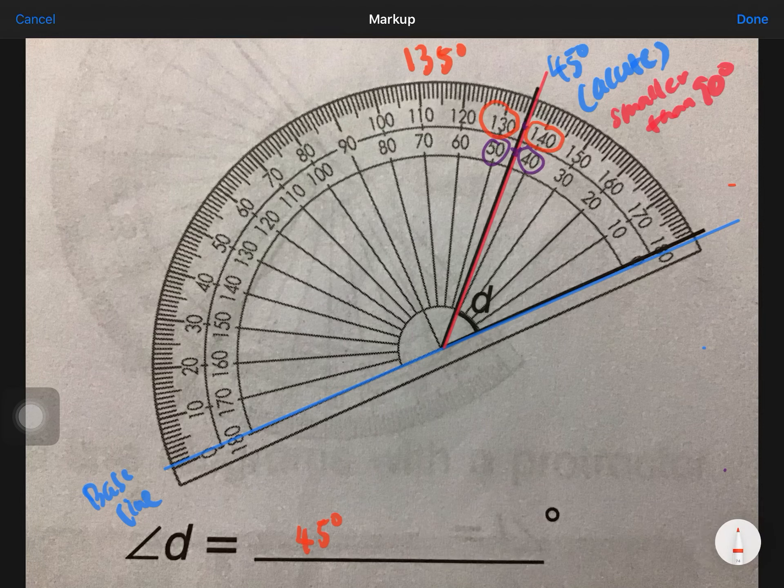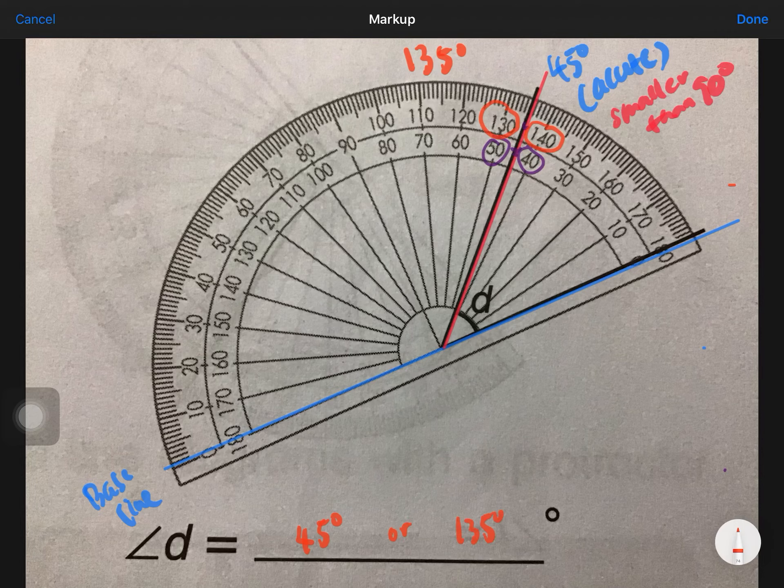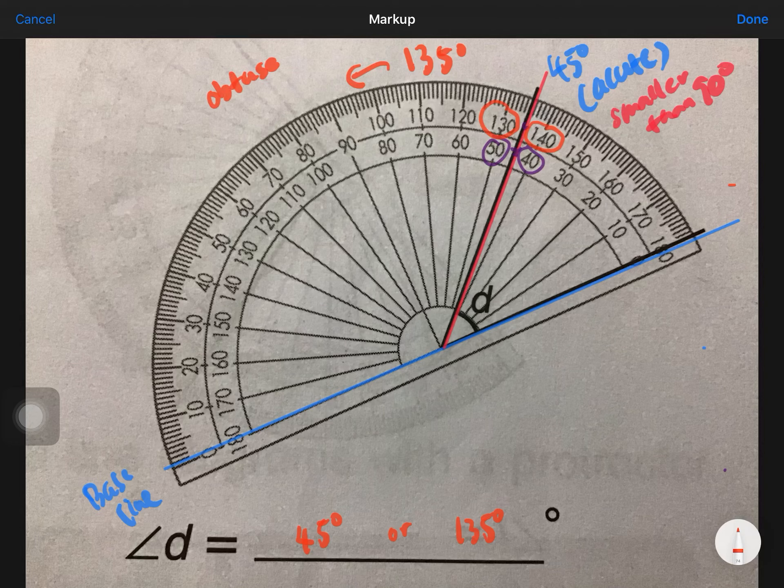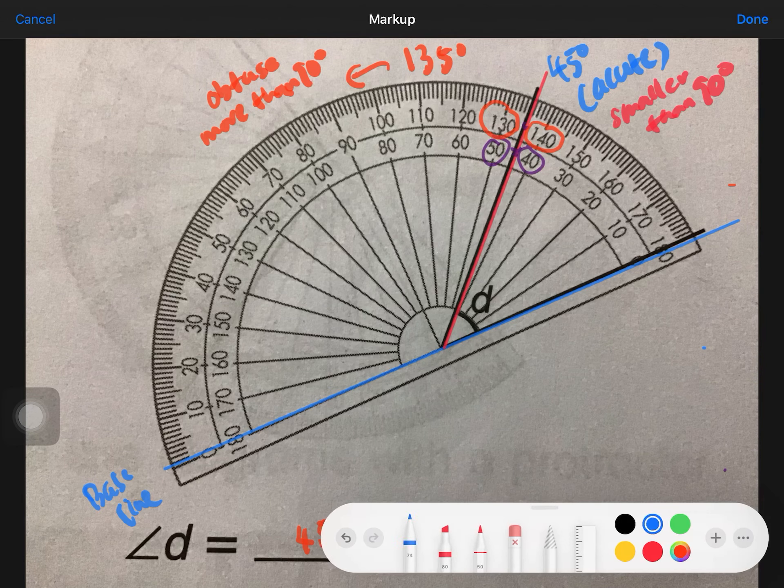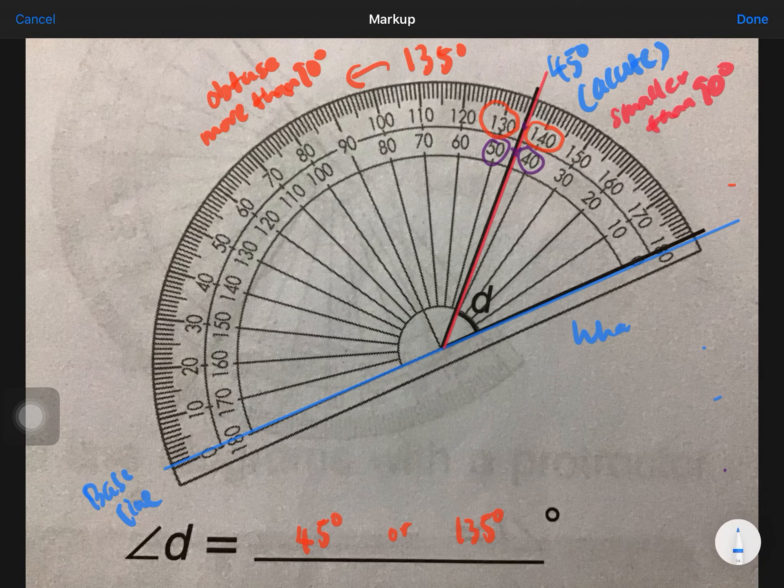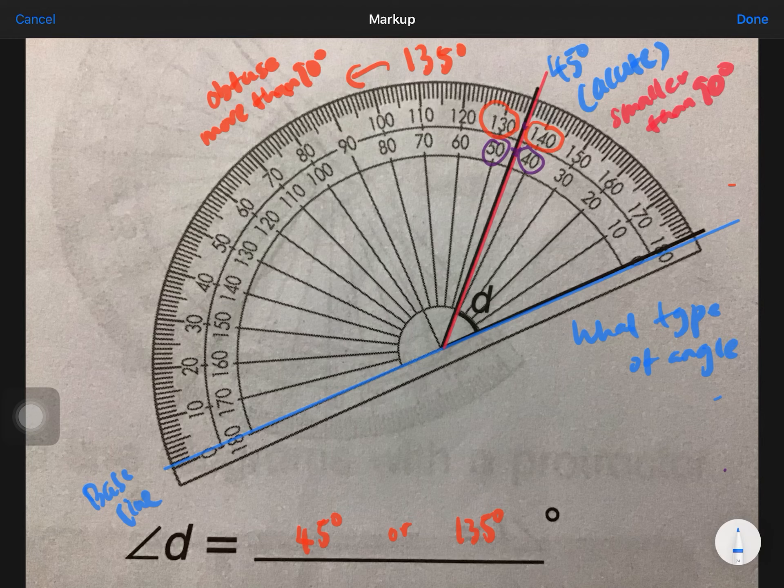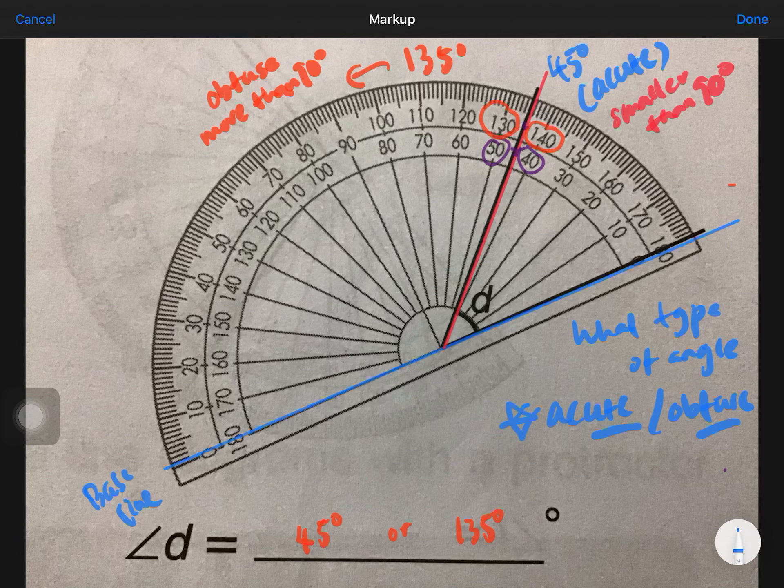So the question is either 45 degrees or 135 degrees. So how do I choose which one? It's actually determined by whether it's an acute or obtuse angle, more than or less than 90 degrees. This is a very important question you need to ask yourself: what type of angle, acute or obtuse? A lot of people just miss out this question; they just jump, they just pick the first number that they see, and they got it wrong.